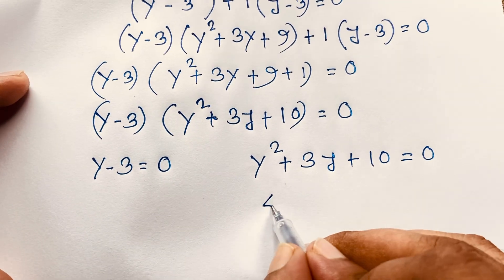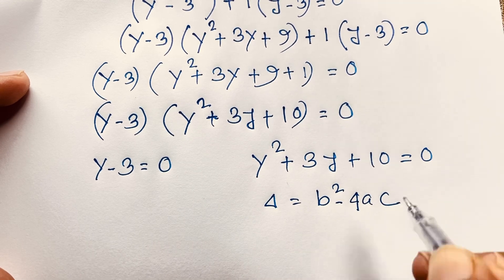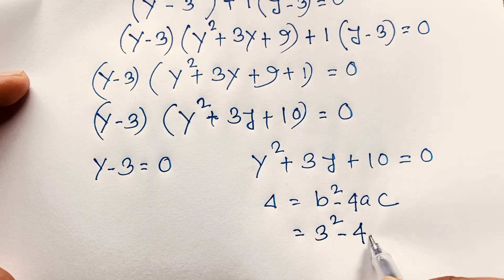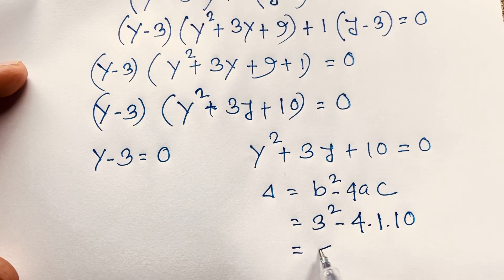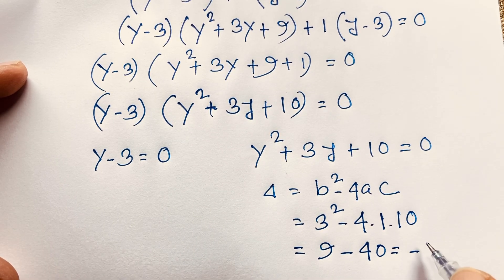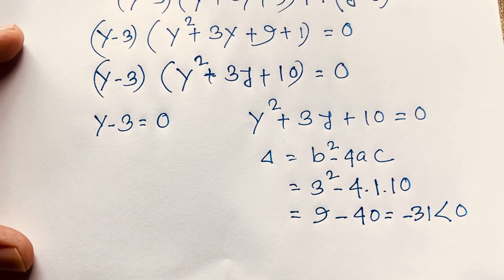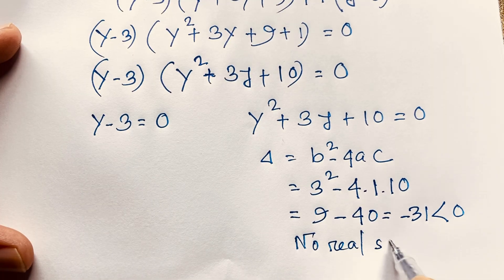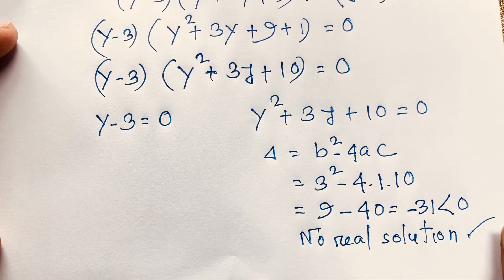For the second case, we calculate the discriminant: delta = b² − 4ac. Here b = 3, a = 1, and c = 10. So delta = 9 − 40 = −31, which is less than 0. This gives a complex number — no real solution. We need a real solution, so this case is not possible.